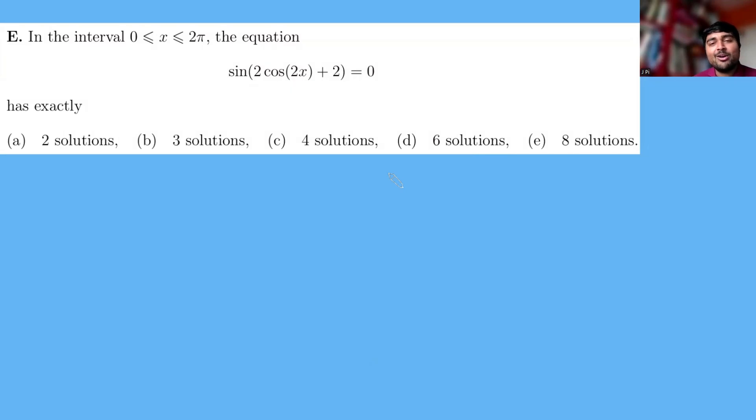Hi, thanks for joining me today. I've got a problem from the Oxford University Maths Admissions Test. We want to find the number of solutions of the following equation: sine of 2 cos 2x plus 2 equals 0, and x is between 0 and 2 pi inclusive.